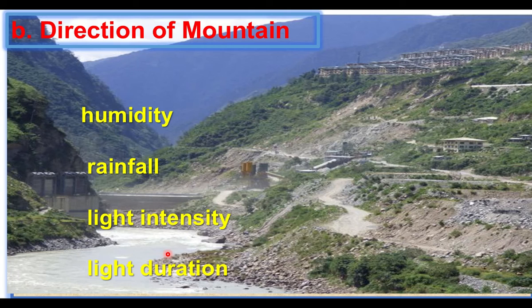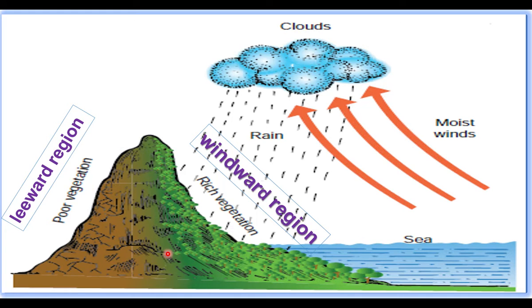One slope receives heavy rainfall, and vegetation is very high there. A mountain has two regions: windward and leeward. The windward region has more wind and receives good rainfall, so it is rich with vegetation. The leeward region is poorly vegetated due to poor rainfall.